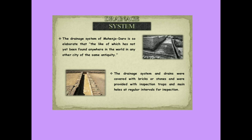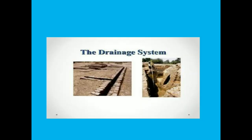This shows there was great concern shown for public health. The drainage system took care of flooding and other natural calamity factors. The streets were broad and laid out in a grid pattern, with houses built in rectangular blocks.